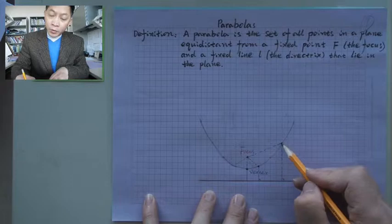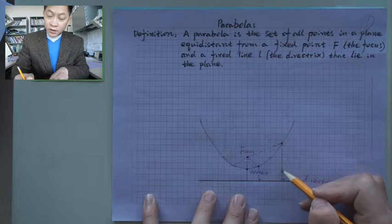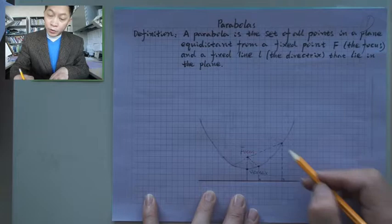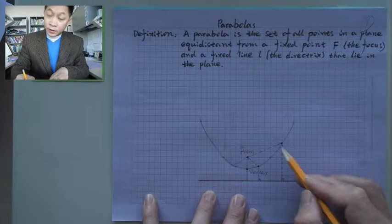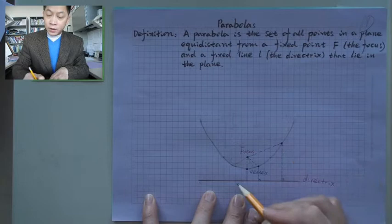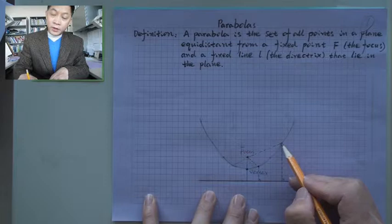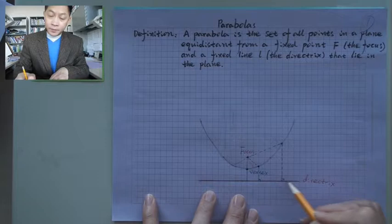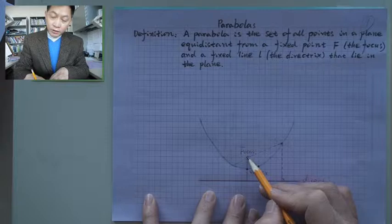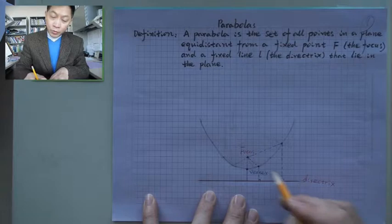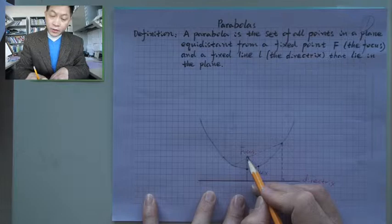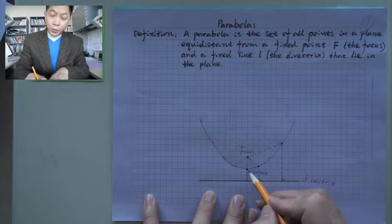The distance between a point and a line has to be a vertical distance, meaning perpendicular to the directrix. We call the distance between a point and a line the shortest one, which is perpendicular to the directrix. This point is apparently equidistant from the focal point and the line, as is this other point. The special point is right in the middle between the focus and the directrix.